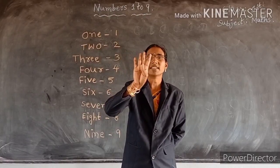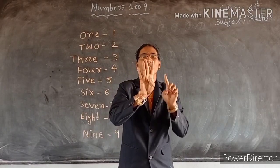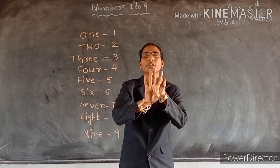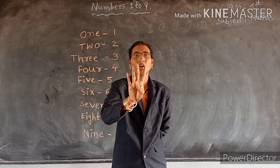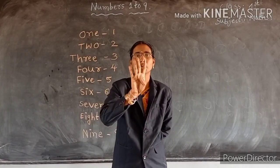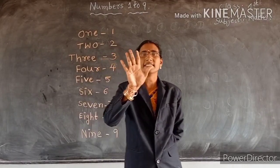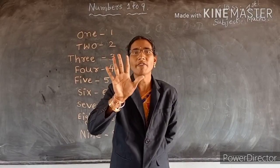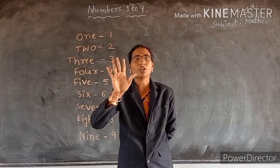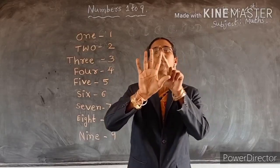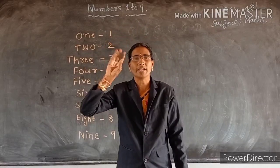How many fingers are there, children? Tell me, count. One, two, three, four. How many fingers are there? Four. F, O, U, R. Four. How many fingers are there, children? Five fingers. How many fingers are there? Five. Count, children. One, two, three, four, five. Five fingers.